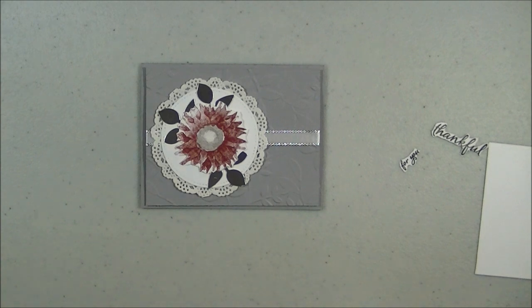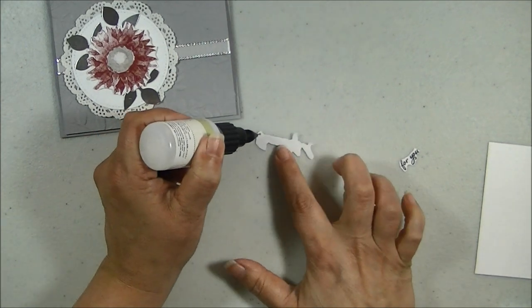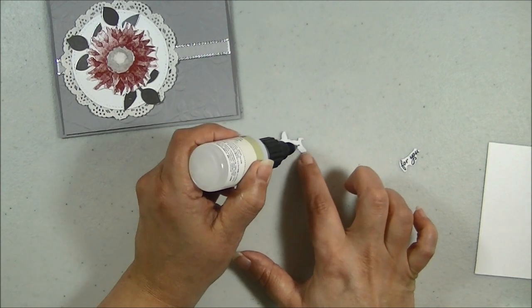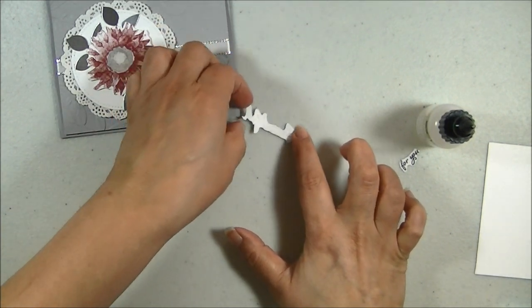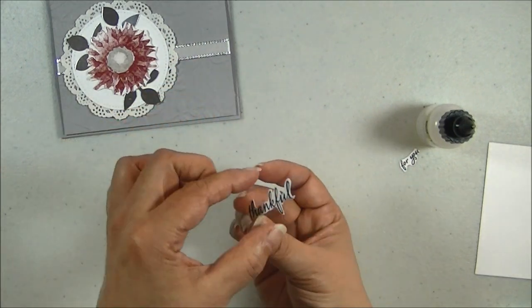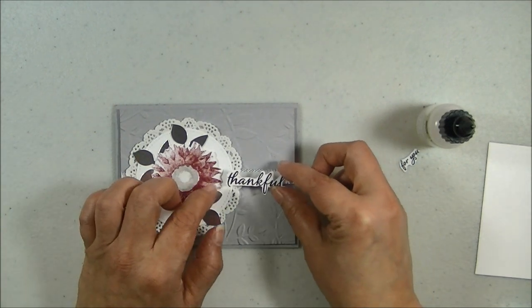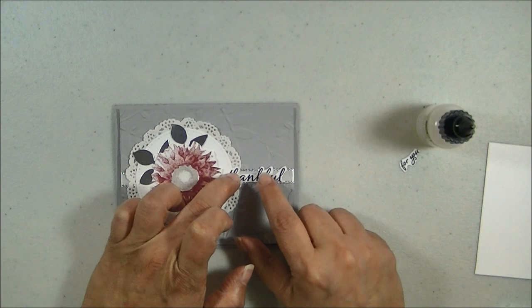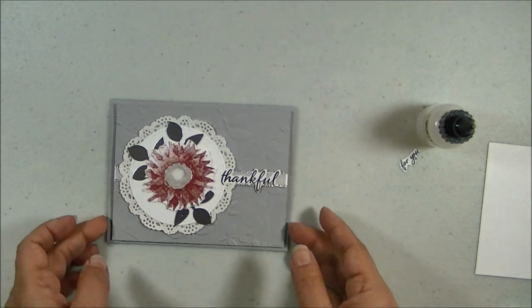I am going to grab my fine tip glue pen. And then I am going to take my little thankful. And I am just going to put some dots of glue behind it. Like so. Then I am going to pick it up. Turn it around. And then I am going to put my thankful on top of my circle and doily and then on to my ribbon. And hold it down for a second. Like that.